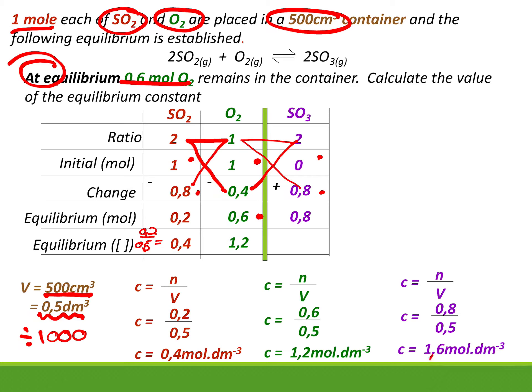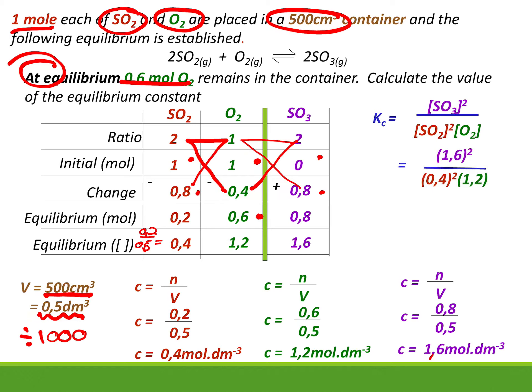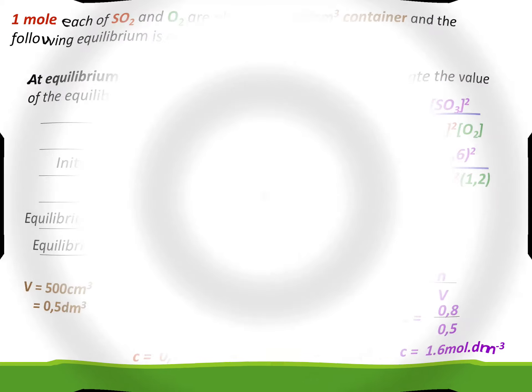Now we do the Kc expression: Kc = [SO₃]² / ([SO₂]² × [O₂]) = 1.6² / (0.4² × 1.2). Use your calculator — for the first time you're getting a decimal answer, which is perfectly acceptable; these do not have to be whole numbers. Now do Activity One on page 245, and also do the ones in the electricity worksheet on Teams.